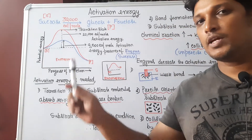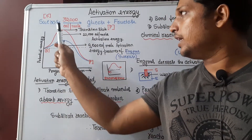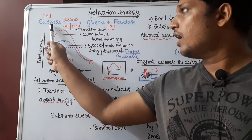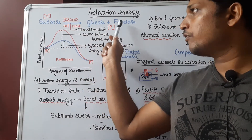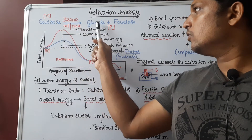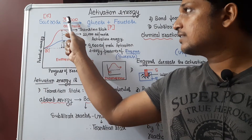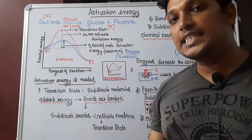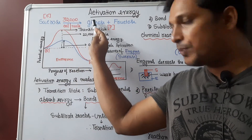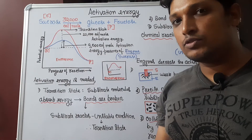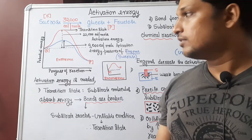Hello, good morning everyone. Today we are going to learn what is meant by activation energy. To explain activation energy, I have taken a simple reaction of hydrolysis of sucrose. Sucrose in the absence of enzyme undergoes hydrolysis to form glucose and fructose. Here sucrose is the substrate, glucose and fructose are the products. For sucrose to undergo hydrolysis in the absence of enzyme, it needs 32,000 calories per mole of energy as activation energy. Conversion of sucrose to product requires energy to start the reaction — that energy is activation energy.